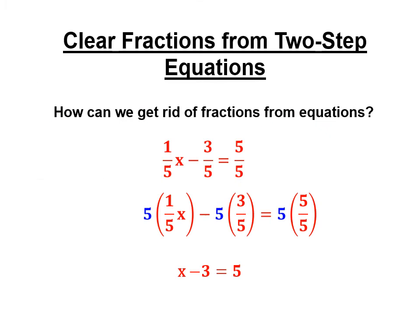We're going to be doing problems like this: if you have 1/5 x minus 3/5 equals 5/5, we could get rid of all these fives in the denominator. Because if we don't, we're going to have to add 3/5 to both sides. It's easier to clear it. So you multiply everything by 5. These fives cancel and you get x minus 3 equals 5. Then you can solve the equation. It turns out x equals 8.